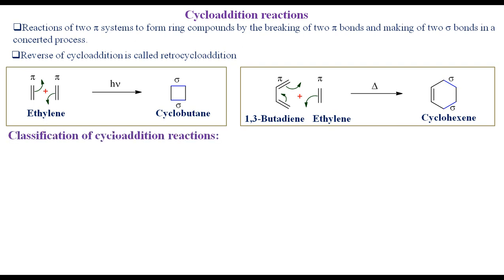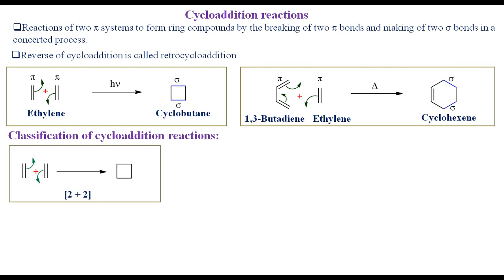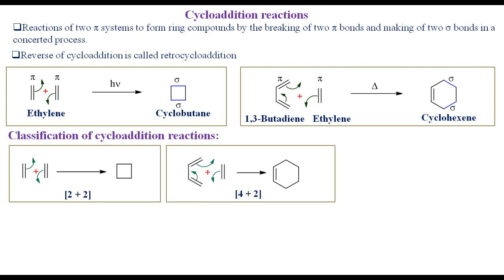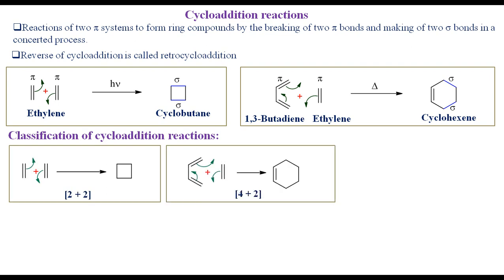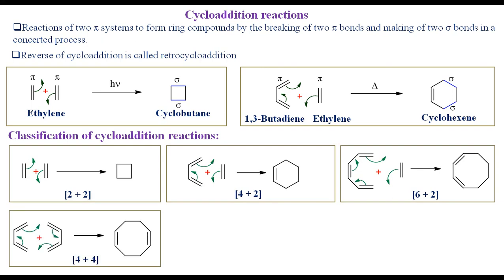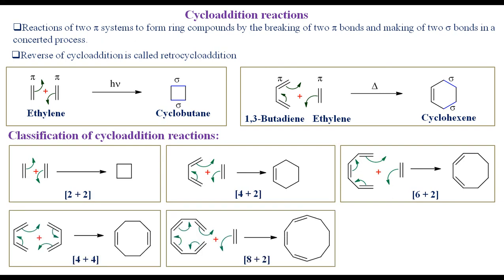Based on the number of pi electrons of the reactant species involved during the reaction, cycloaddition reactions have been classified as 2+2, 4+2, 6+2, 4+4, 8+2, 6+4, etc.